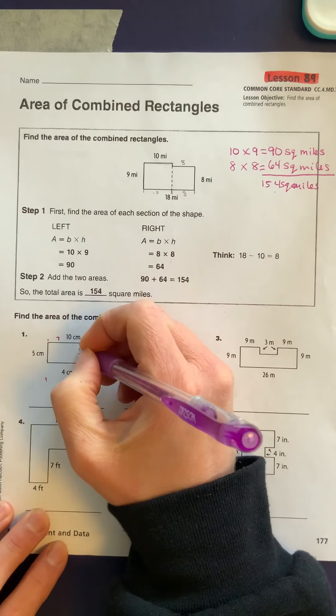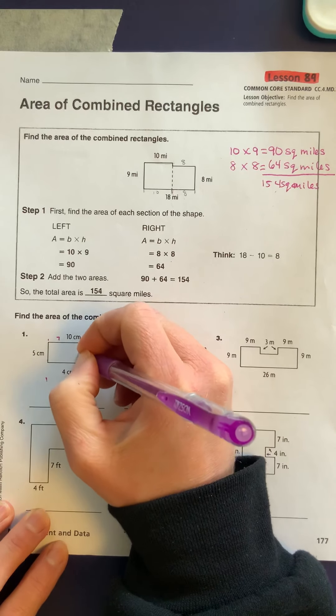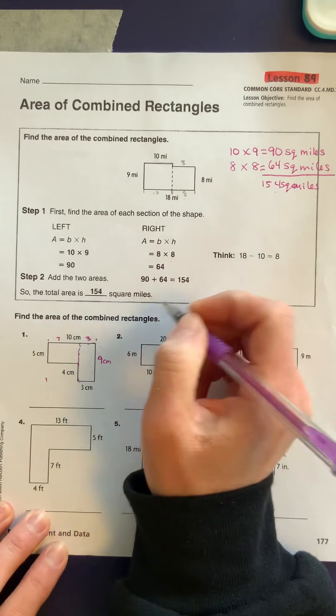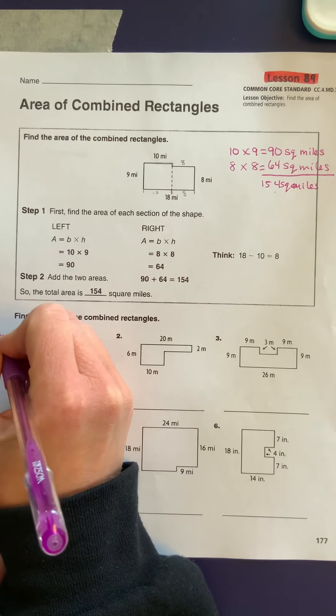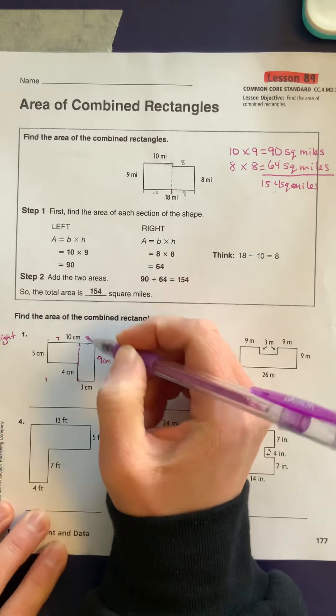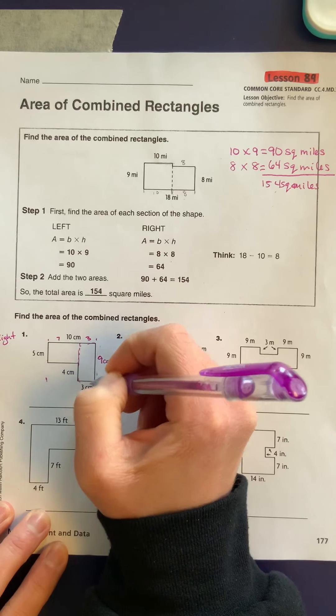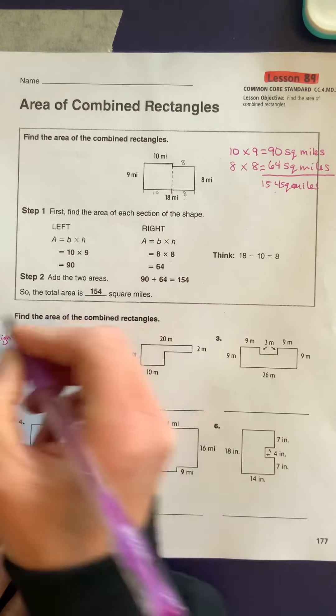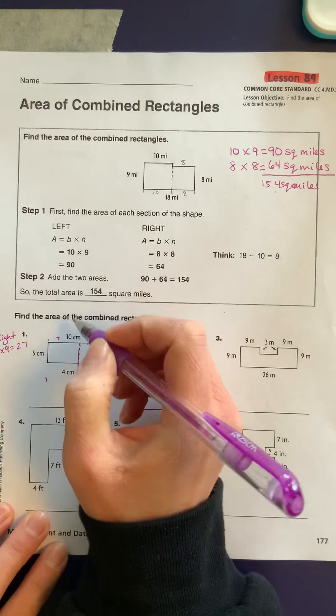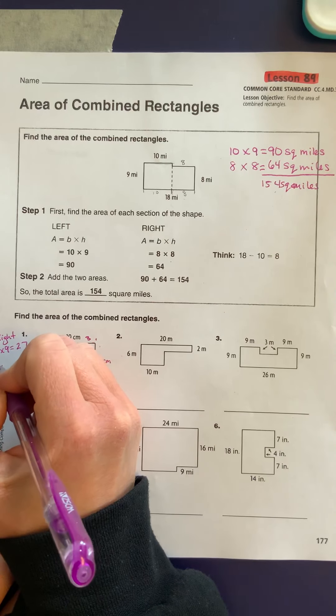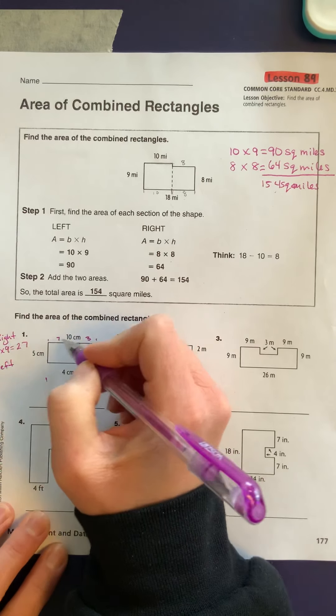So we're going to find the area of this rectangle first. This is the rectangle on the right, and this is the rectangle on the left. So the rectangle on the right, we're going to take the base times the height. So that's going to be 3 times 9, which gives us 27.